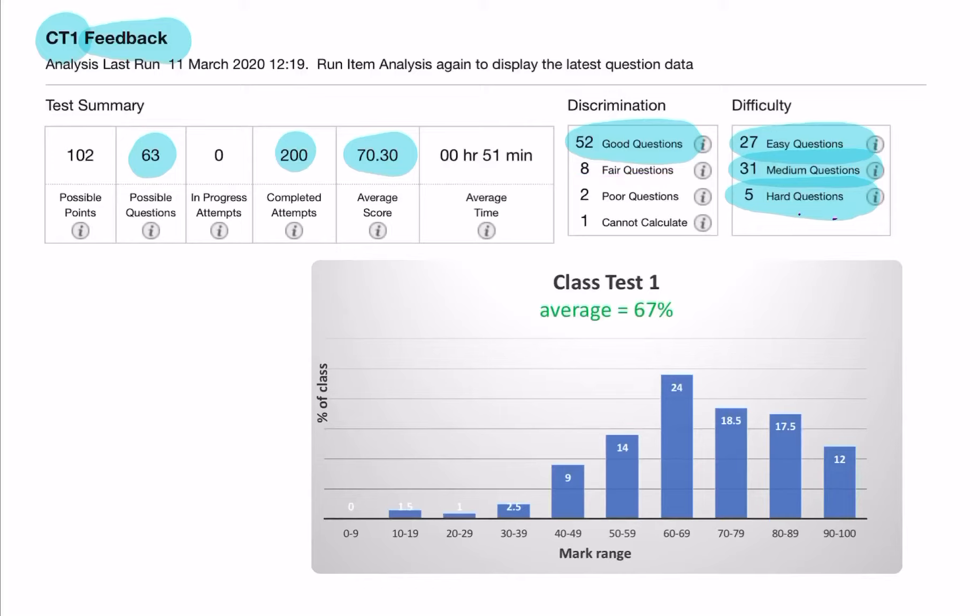Looking at the distribution of marks, the average was 70.3. We have 12%, that means 24 students, getting a mark between 90 and 100. There's actually 11 students who got 100%, so 11 students got full marks. 13 students got marks between 90 and 99. And if you look at these three columns, what we have here is just under 50% with a first class mark.